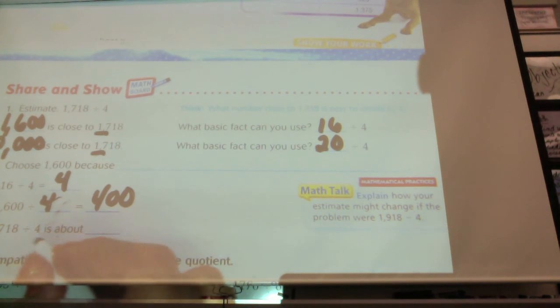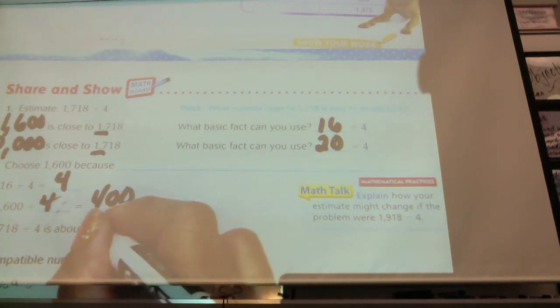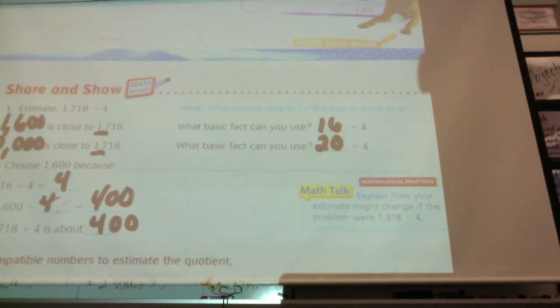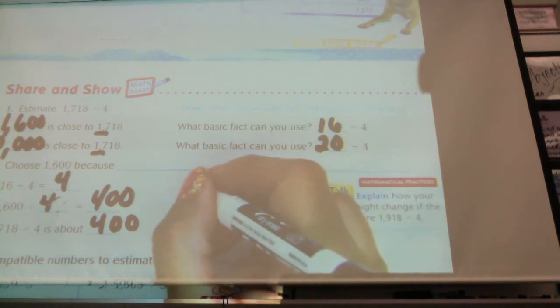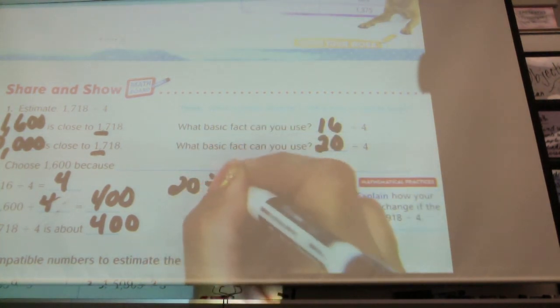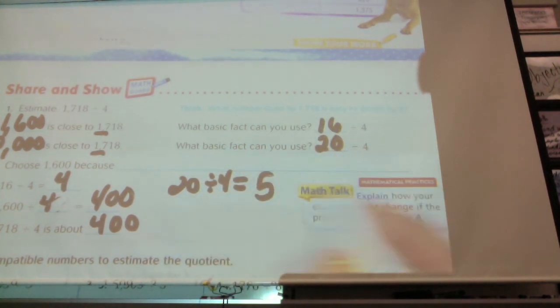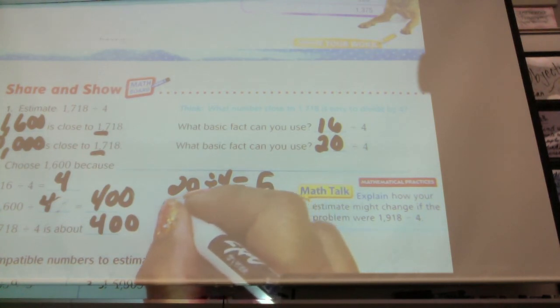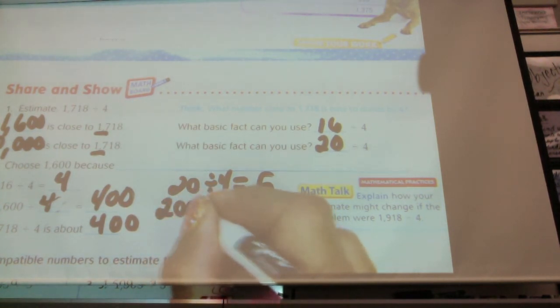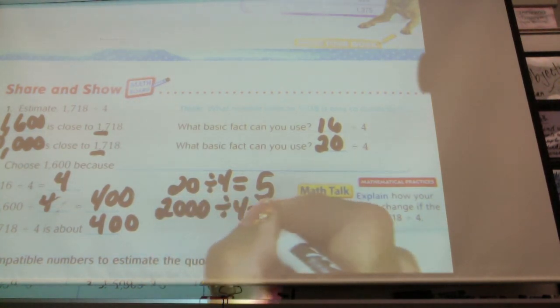And so 17 divided by 4 is about 400. I don't know why it didn't give you the other one to work with. You could say between. If we wanted to do between we would say 20 divided by 4 equals what? 5, right? So 500, or 2,000 divided by 4 equals?